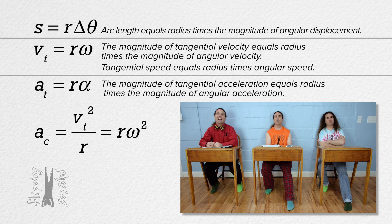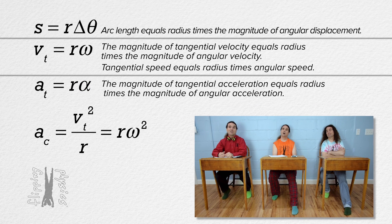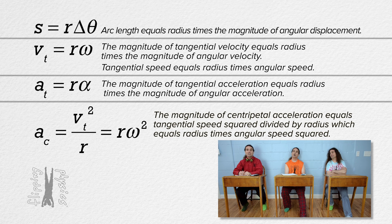You know, it probably does not help to call it 'fishy thing' here. Fishy thing clearly is not very clear. Yeah, that is too bad. The last equation is the magnitude of centripetal acceleration equals tangential speed squared divided by radius, and it also equals radius times angular speed squared.